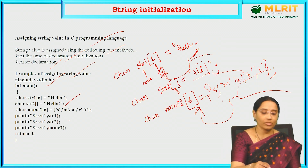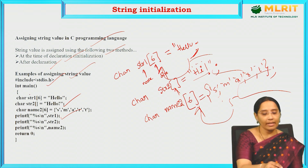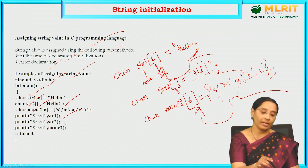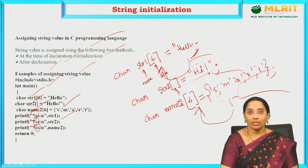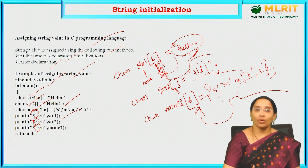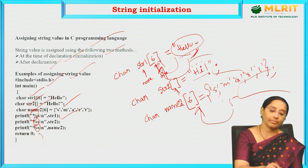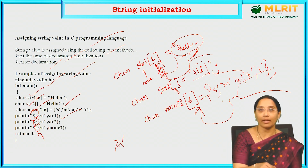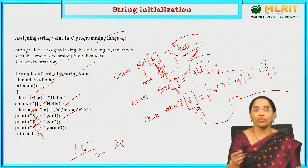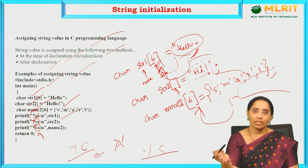This is compile time initialization — directly printing with printf str1. Here str1, str2, and name2 are the names of the strings. Even though the data type is character, you are assigning and printing a string. The format specifier here will be %s, not %c, because you are not storing a single character. Here you are grouping a number of characters enclosed in double quotes — that is a string — so the format specifier to use is %s.